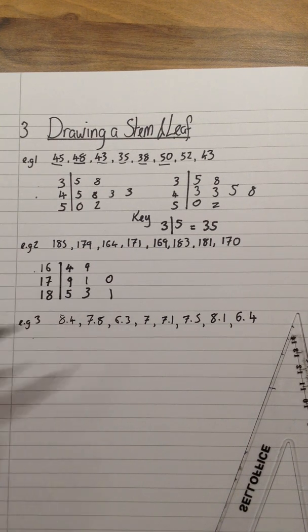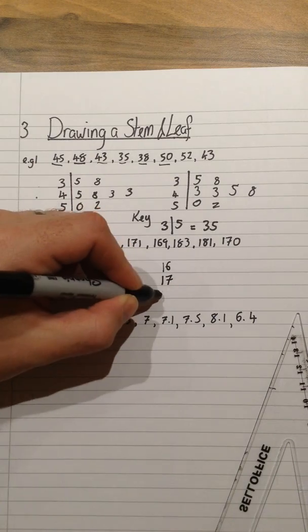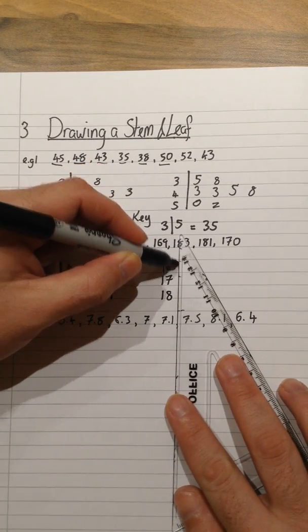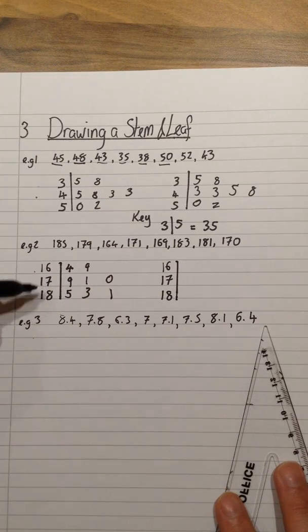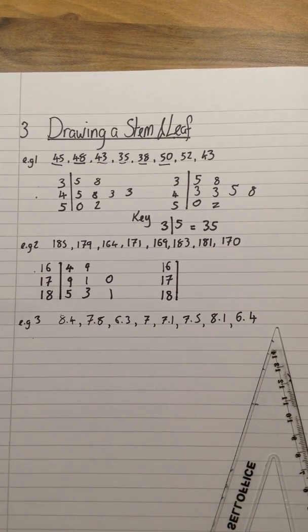This will get me one mark on an exam. But there are two more marks available. That is for then ordering the stem and leaf. So again, I put the exact same numbers in the stem. So 16, 17, and 18.